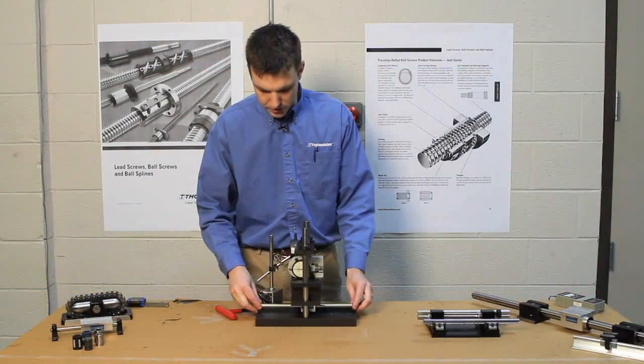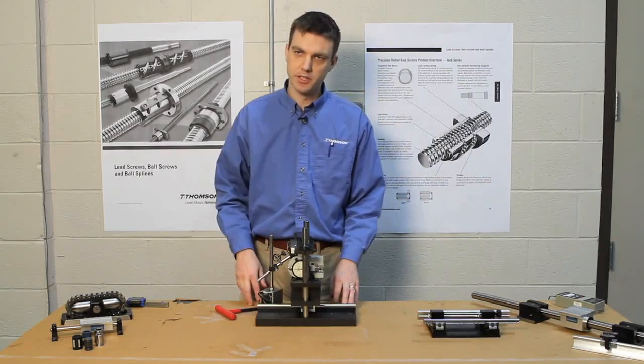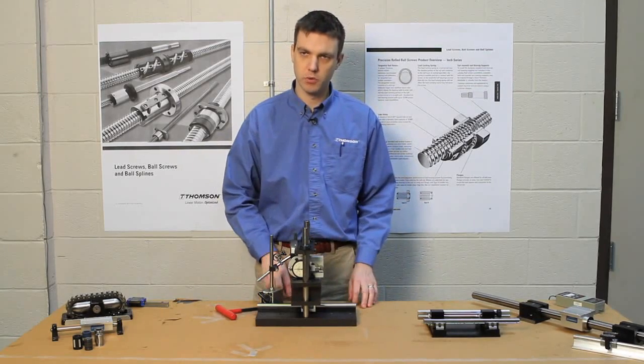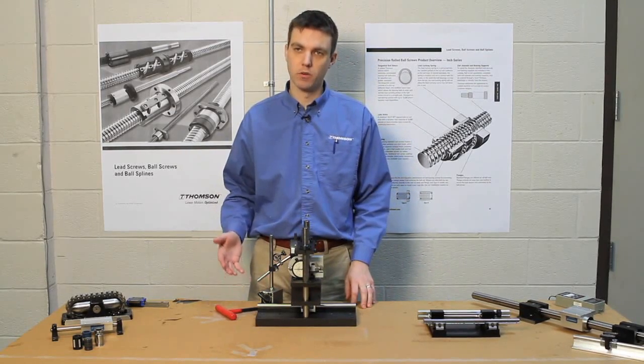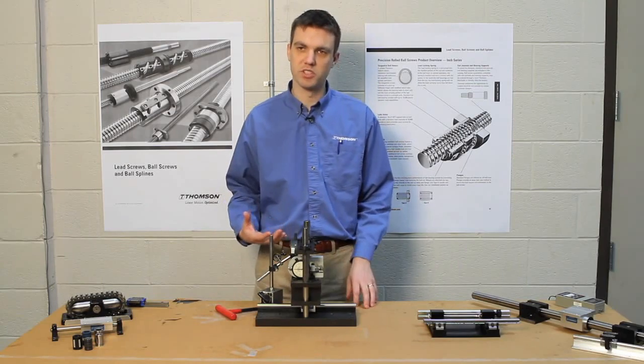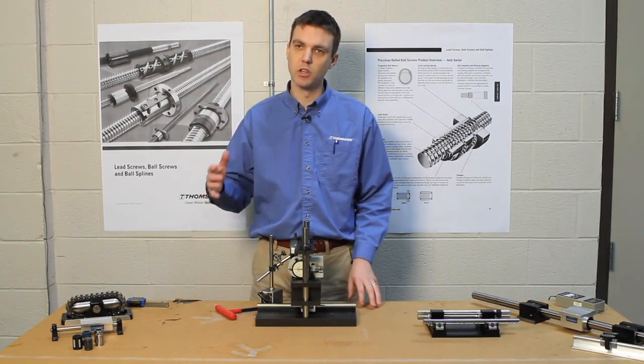In this case we are going to be showing how the deflection characteristics vary from round rail to square rail. One advantage square rail has over round rail is because it's much more stiff, it'll deflect a lot less once the load is actually applied.